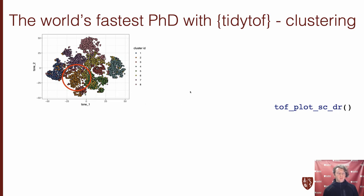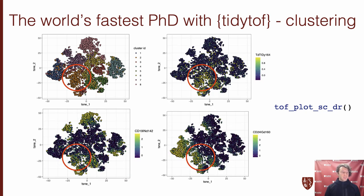From here, you might want to visualize your results so far and compare them to the original study, so that's what I did. Using the TOF plot single cell dimensionality reduce verb, we can create a t-SNE embedding for each of our cancer cell clusters. One of these clusters, actually the second cluster which I've circled in red, stood out to me because it expressed high levels of three phenotypic markers associated with relapse in the original study, and these are TDT, CD19, and CD24.